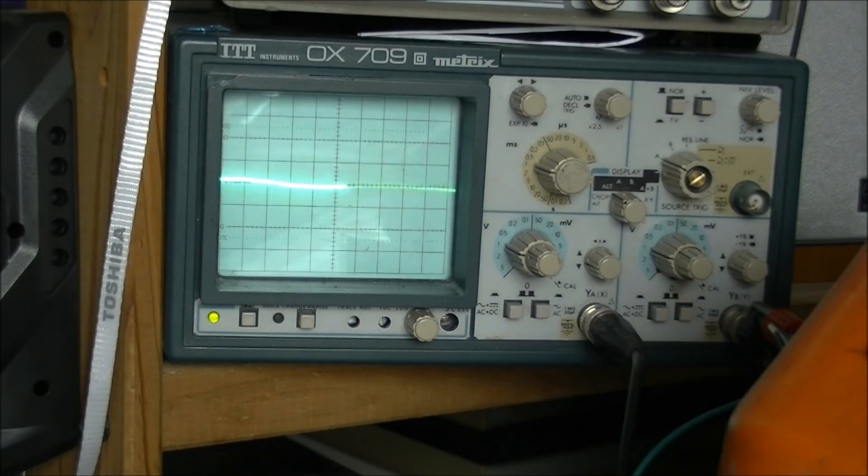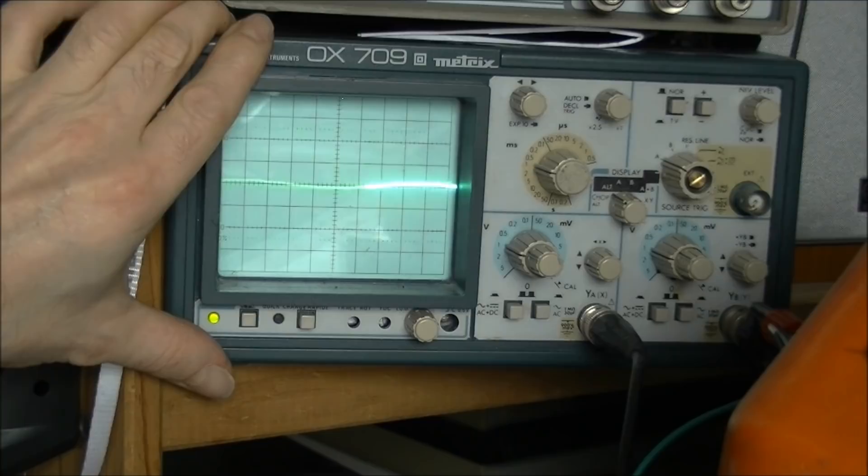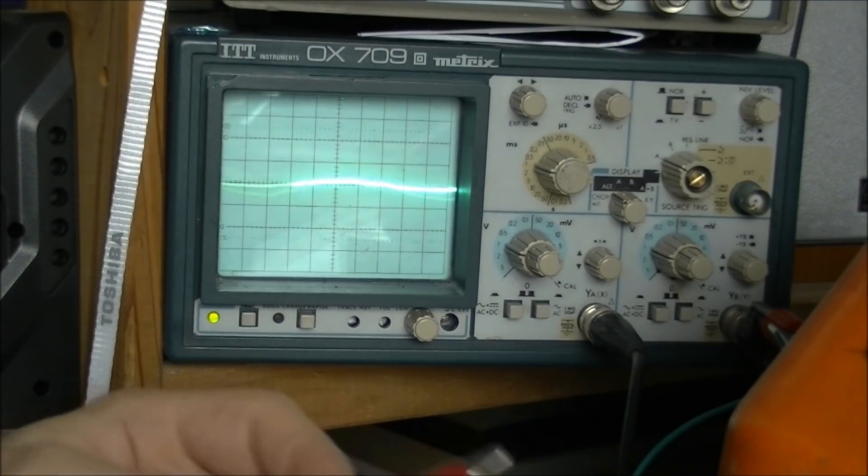Now we will go to the oscilloscope and check how are the signals from this box for now. So you need to know I am low budget. And all what I have is a two-channel analog oscilloscope.